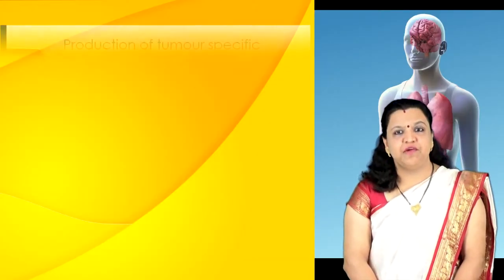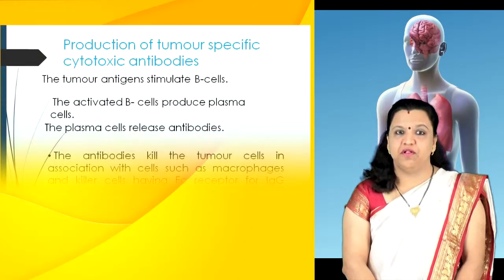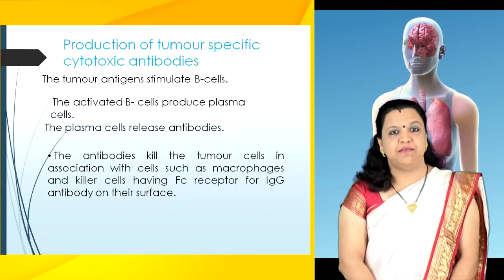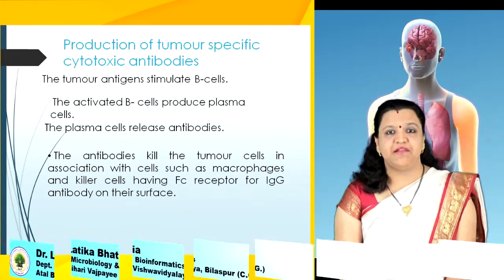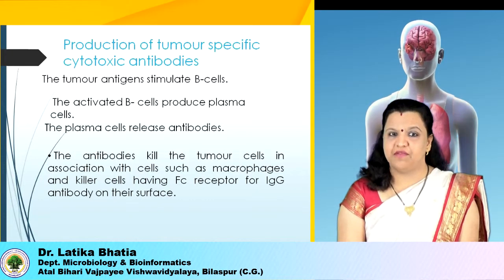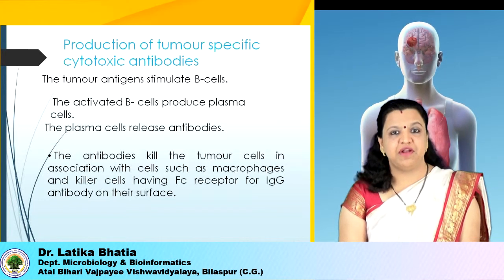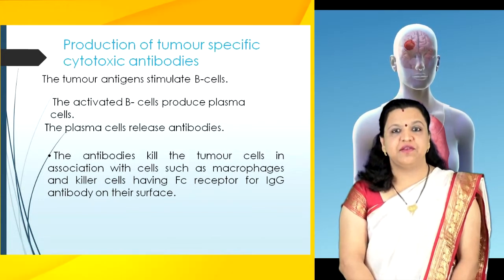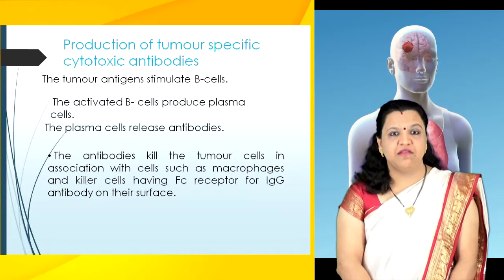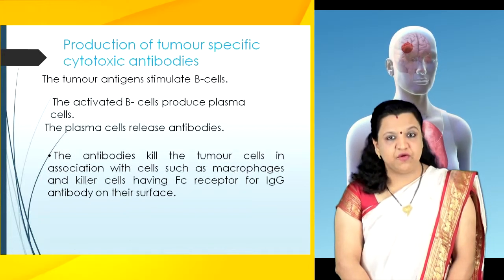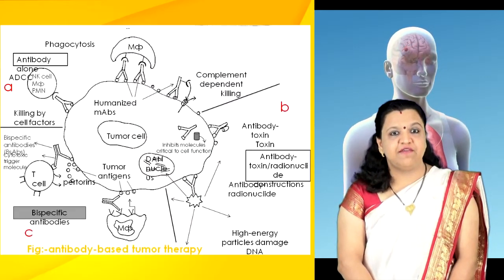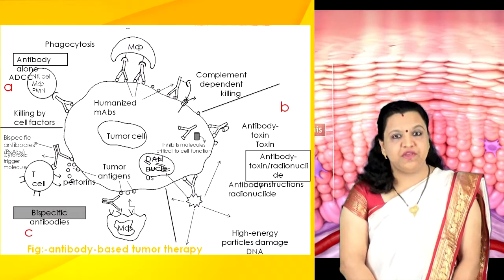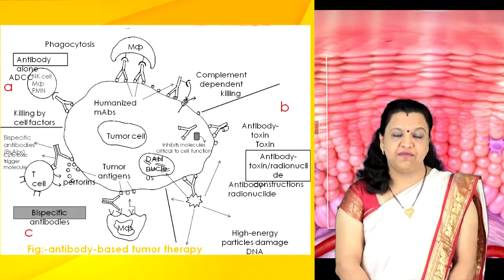Production of tumor-specific cytotoxic antibodies may also take place. The tumor antigen stimulates the B cells, the activated B cells produce plasma cells, and the plasma cells release antibodies. These antibodies kill the tumor cell in association with cells such as macrophages and killer cells having Fc receptors for immunoglobulin G antibody on their surface.